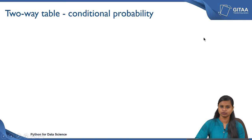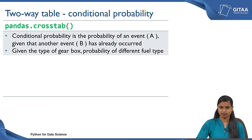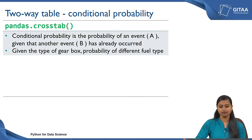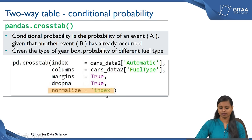Now let us move on to get the conditional probability using the two-way table. We are also going to use the same pandas.crosstab function. Conditional probability is the probability of an event A given that another event B has already occurred. The example we are going to look at using conditional probability is: given the type of gearbox, what is the probability of different fuel types? The first four parameters remain the same, but we have just tweaked the normalize parameter — changing it to 'index' just to get the conditional probability values.